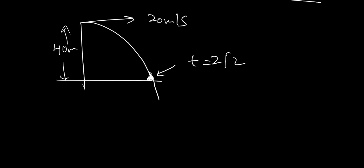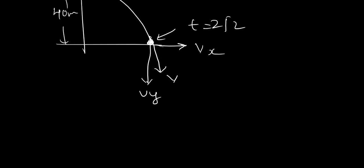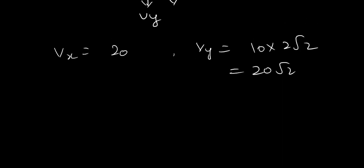Toh, yeh kuchh is angle per hit kar raha ho ga. Toh, yeh component ho ga vx, or yeh component ho ga vy. Toh, vx toh, mujhe pata hai, wo change nai ho ga, wo toh 20 rae ga. Or, joh vy ho jayega, wo, minus gt se. It will be g into t is 2 root 2. So, it will be 20 root 2. Toh, jis velocity se hit kar raha hai.